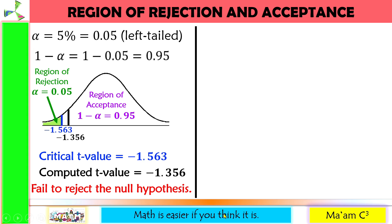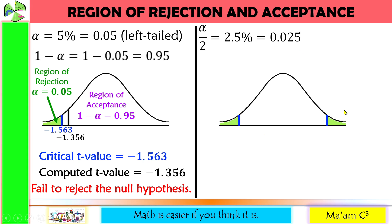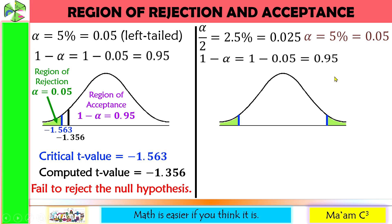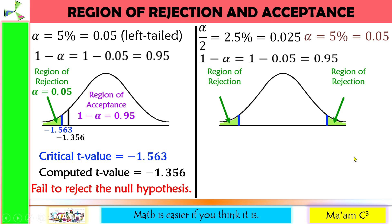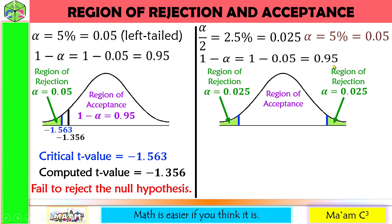Let us have another example. This time we have alpha over 2, a two-tailed test, equal to 0.025. A two-tailed test has a region of rejection on both tails of the curve. If each tail is 0.025, adding them gives 0.05 or 5%, which is our alpha. So 1 minus alpha is 1 minus 0.05 equals 0.95. The shaded area on each tail is 0.025, and the region of acceptance is 95% or 0.95. Adding 0.95 plus 0.025 plus 0.025 gives 1.